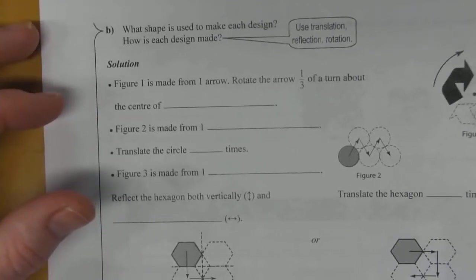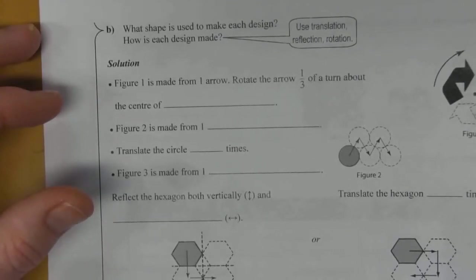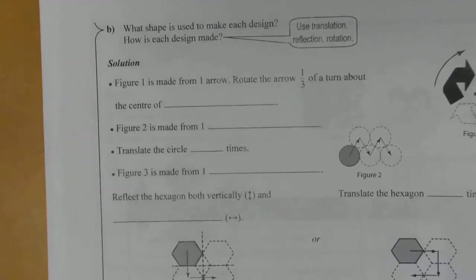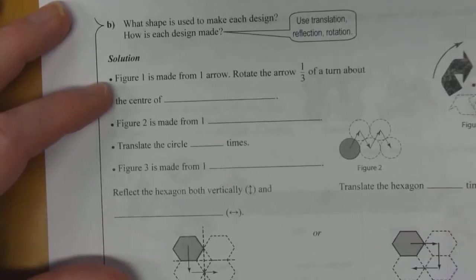We can use translation, which is moving an object side to side or up and down or diagonally. You can use reflection, which is your line of symmetry, or you can use rotation—rotational symmetry.